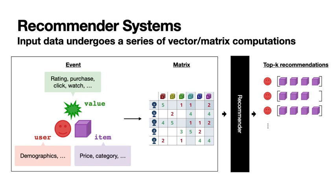This information is converted into the form of a matrix, where rows represent users and columns represent items, with numbers representing observed events. By performing matrix computations on top of the user-item matrix, the recommender ultimately generates a top-k ranked list of recommended items for individual users. That's the high-level overview of how recommenders work.